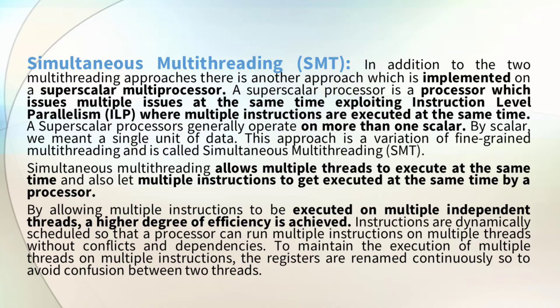Simultaneous multi-threading is an additional approach implemented on a superscalar multiprocessor. This is a processor which achieves multiple issues at the same time, exploiting instruction-level parallelism, where multiple instructions are executed simultaneously. A superscalar multiprocessor generally operates on more than one scalar at a time.